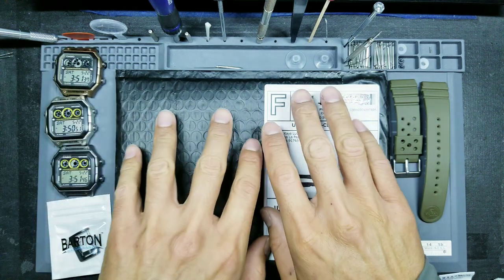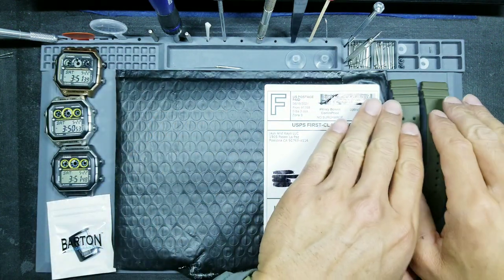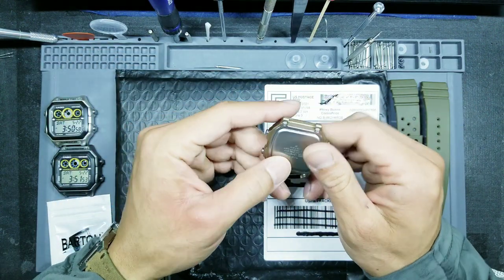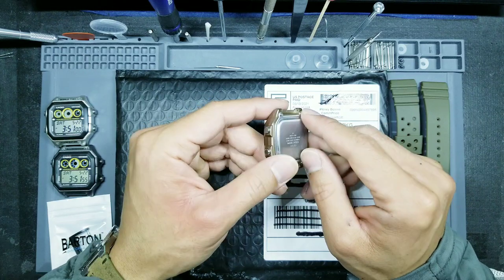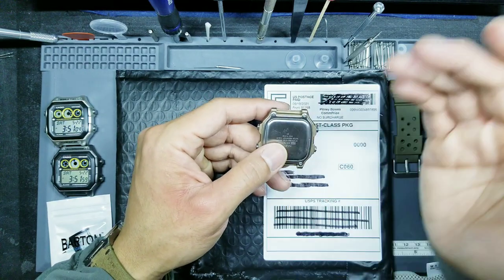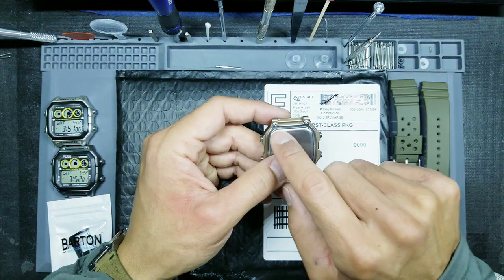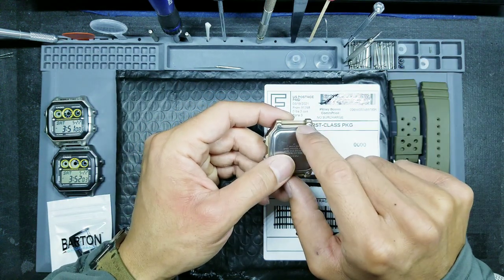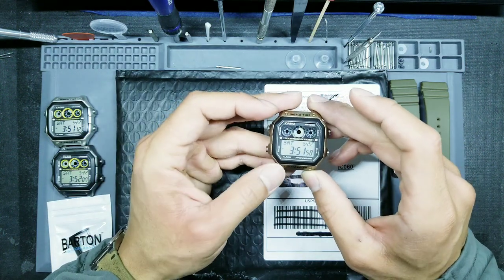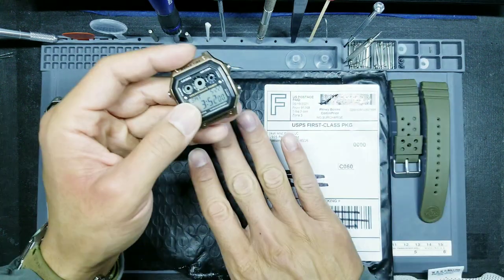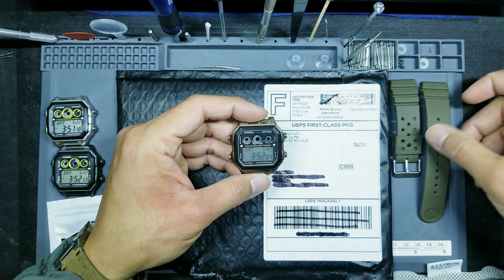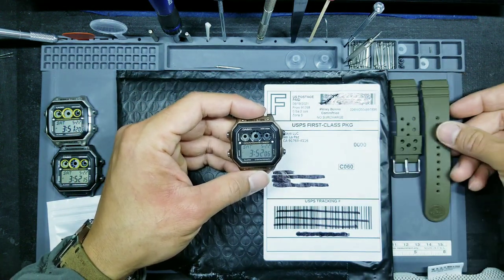These adapters allow you to fit a 22mm strap to the Casio World Time's 18mm lugs. In the past people have been limited because most wider straps come in 22mm lug widths. These adapters allow you to combine those two and will work with both NATO straps and two-piece straps.